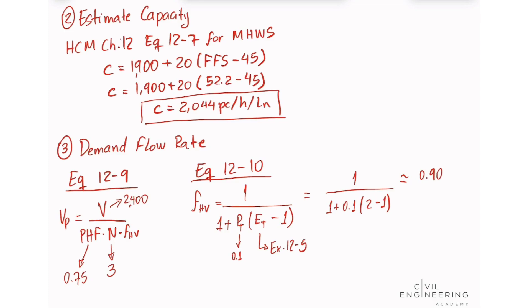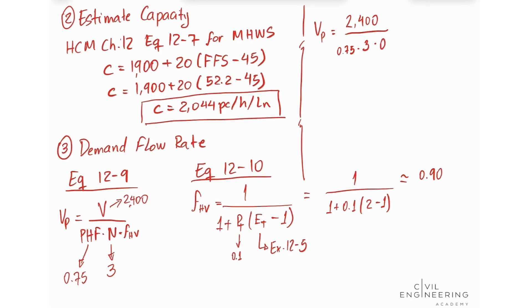Now we calculate our volume flow rate. V_P equals 2,400 divided by (peak hour factor 0.75 times number of lanes 3 times heavy vehicle adjustment factor 0.90), giving us a volume flow rate of approximately 1,185.18 passenger cars per hour per lane.